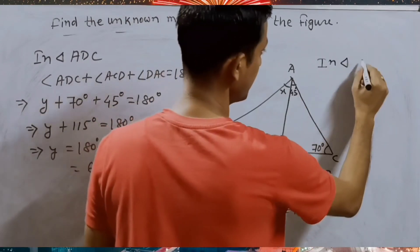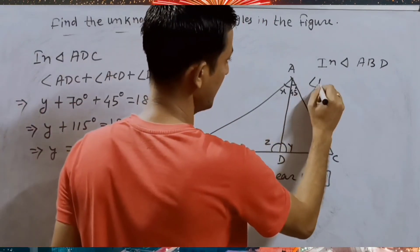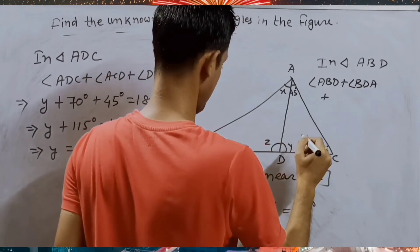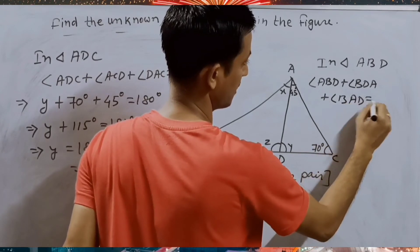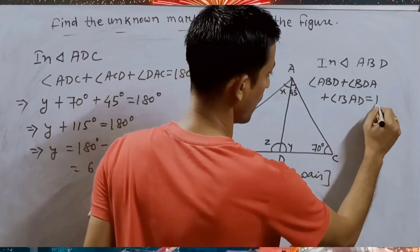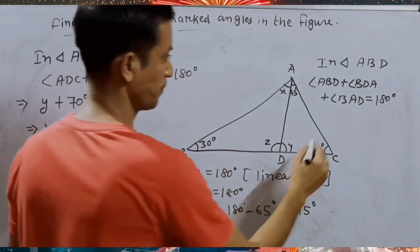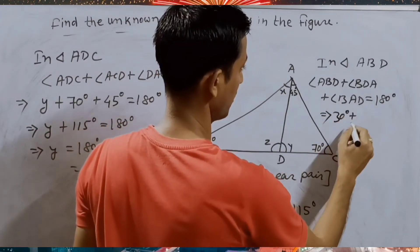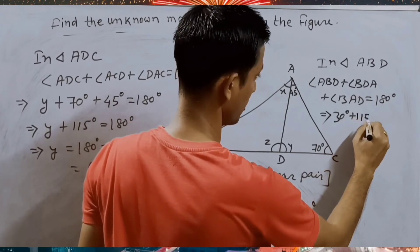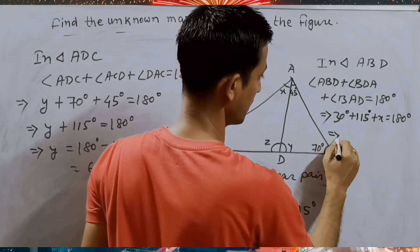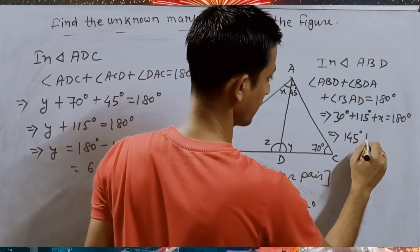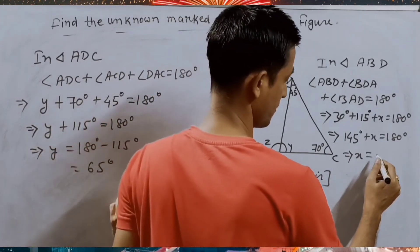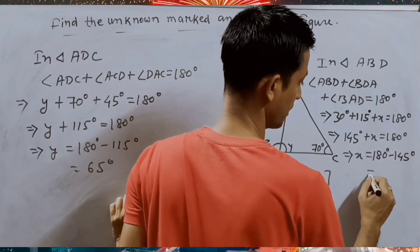In triangle ABD, angle ABD plus angle BDA plus angle BAD equals 180 degrees. Here ABD is 30 degrees, BDA is Z which is 115 degrees, and X we have to find. So 145 degrees plus X equals 180 degrees. Therefore X is equal to 180 degrees minus 145 degrees, which is 35 degrees.